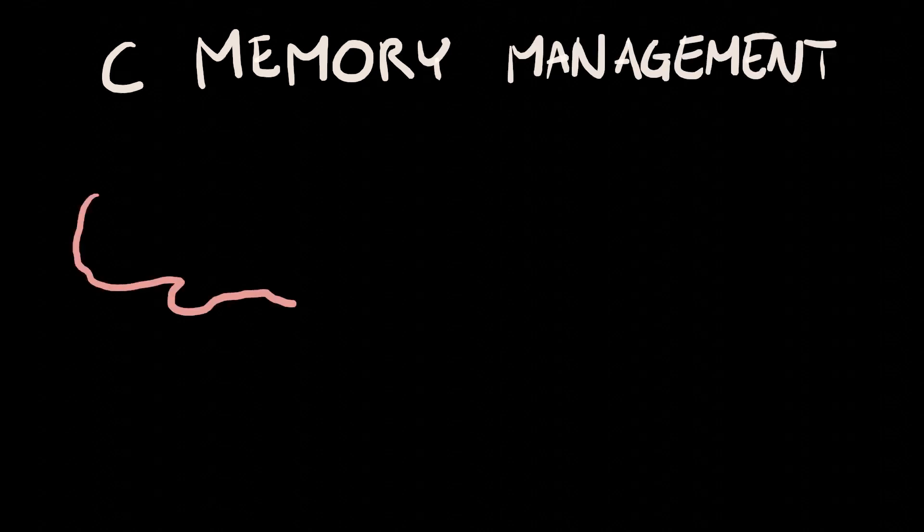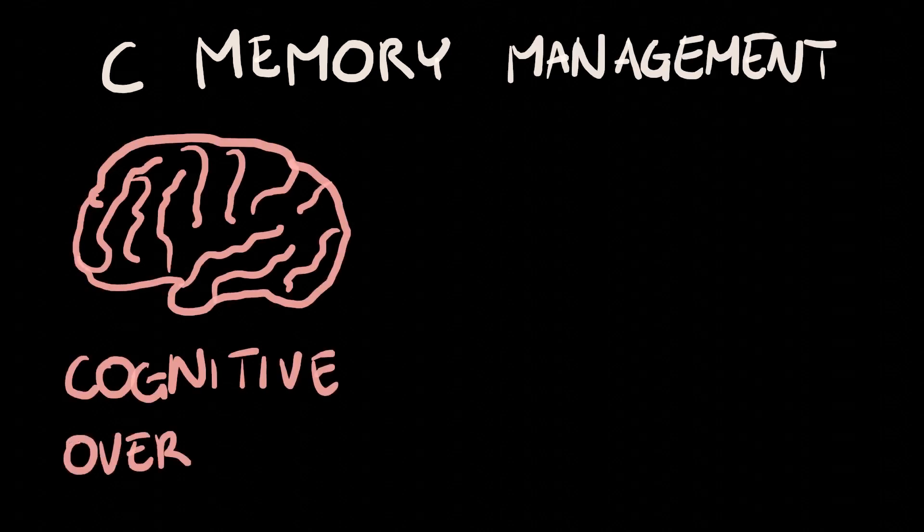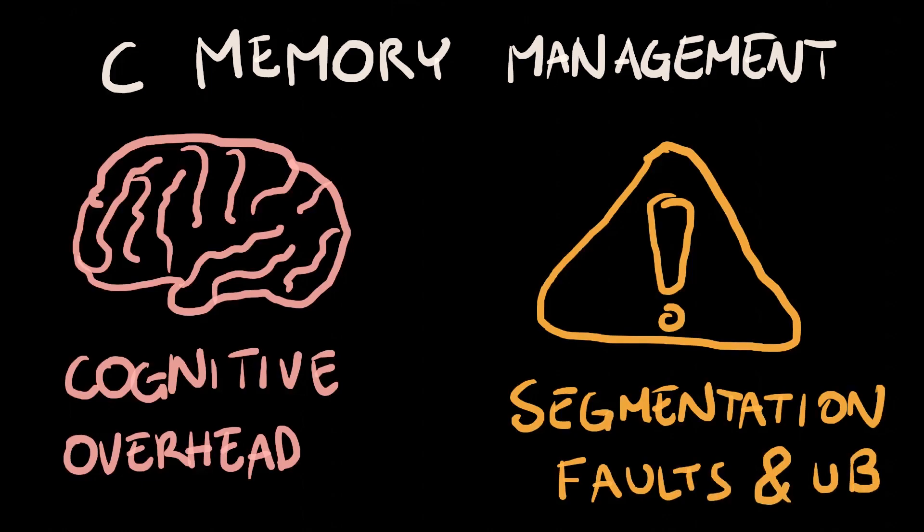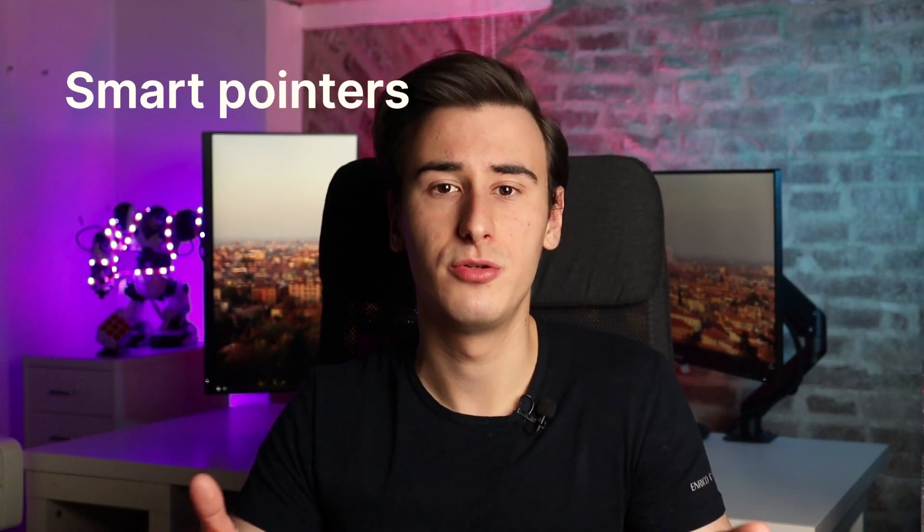Besides the cognitive overhead, you are also running the risk of causing segmentation faults and undefined behaviors. For this reason, modern C++ introduced concepts like smart pointers as a way to mitigate those memory-related bugs. But despite the significant improvements, they are limited in the number of guarantees they can offer.